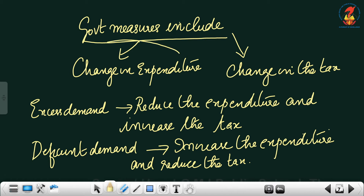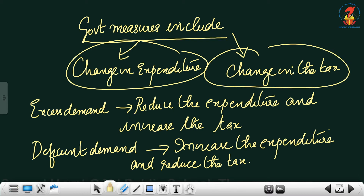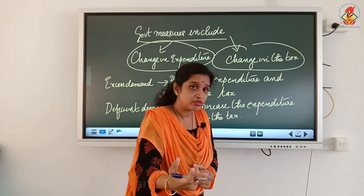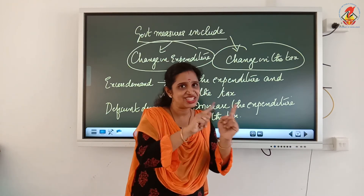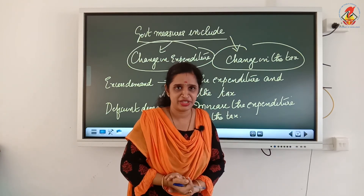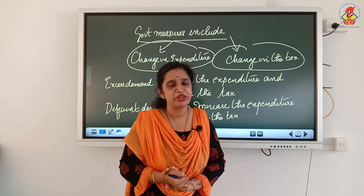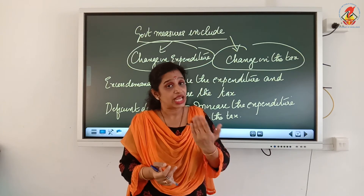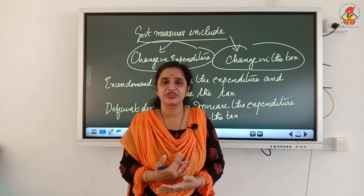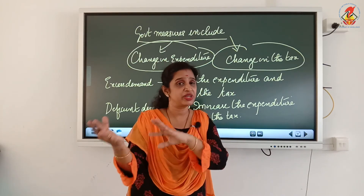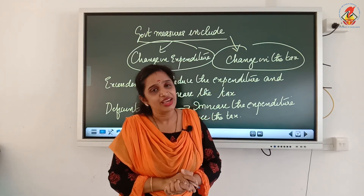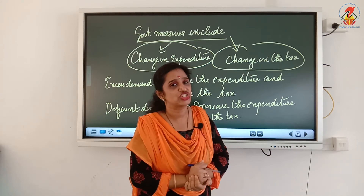Government measures include change in expenditure and change in tax. Tax provides revenue for the government, while spending is expenditure. The government can change its expenditure structure and tax structure — as you learned in the government budget chapter — to control excess demand and deficient demand.